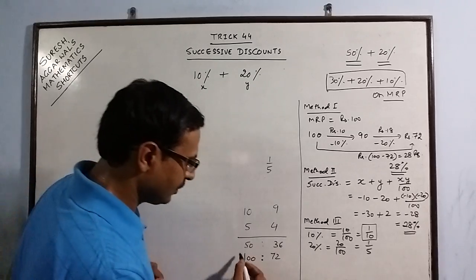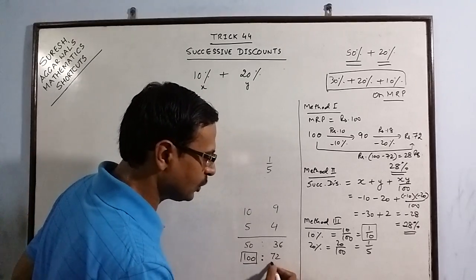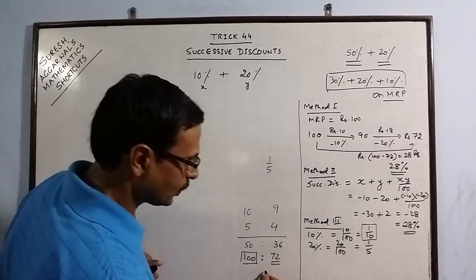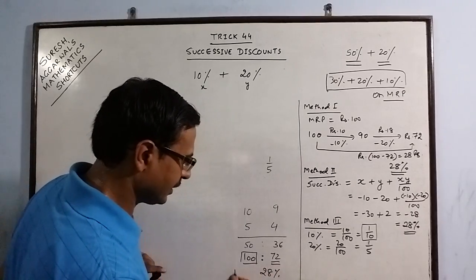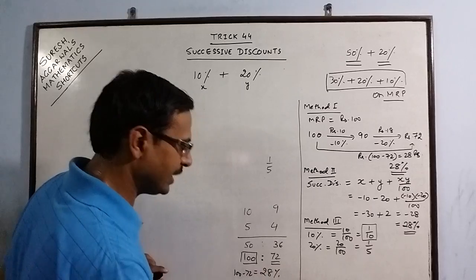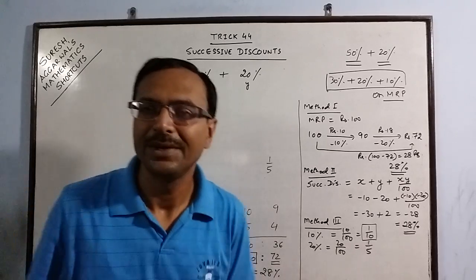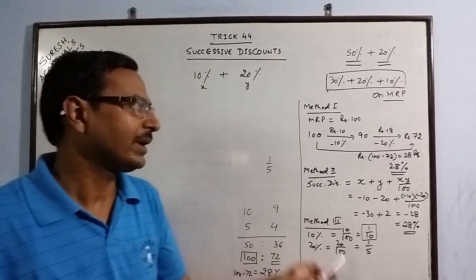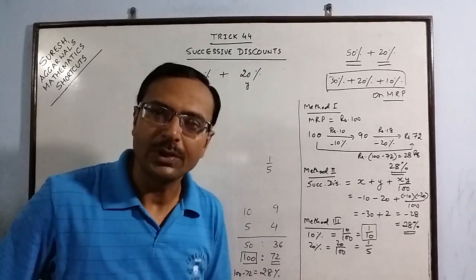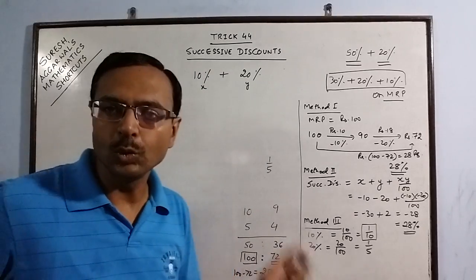So when you have 100 MRP, you have to pay 72 rupees. So you get 28% discount, 100 minus 72 that is 28% discount. This is yet another method through which you can calculate a single discount which is equivalent to 2 successive discounts.